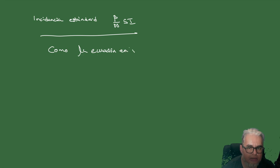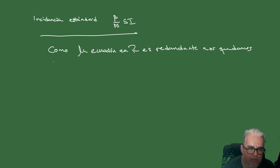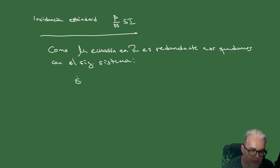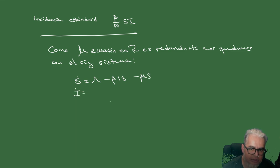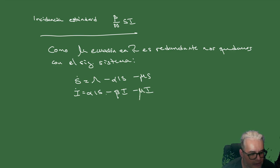Como la ecuación en R es redundante, nos quedamos con el sistema reducido de dos ecuaciones: dS/dt = Lambda - alfa·S·I - mu·S, y dI/dt = alfa·S·I - beta·I - mu·I.